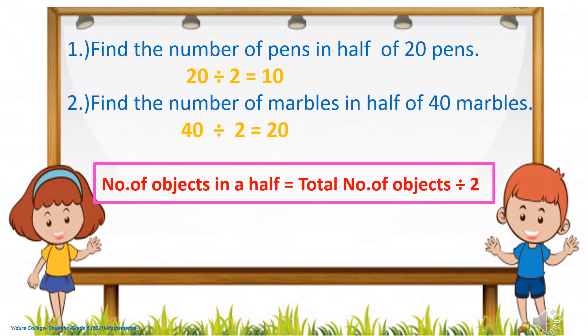Here are some similar questions. Find the number of pens in half of twenty pens — twenty divided by two equals ten. Find the number of marbles in half of forty marbles — forty divided by two equals twenty. So whenever you are asked to find the number of objects in a half, you have to divide the total number of objects by two.